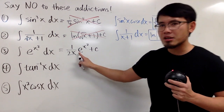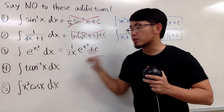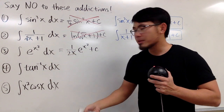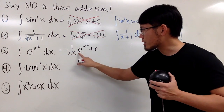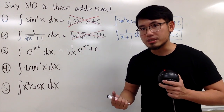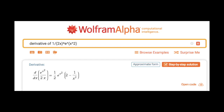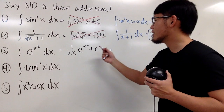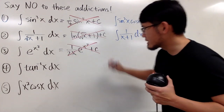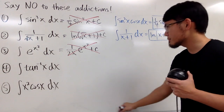Because right here, the derivative of x squared is 2x — it's a function. If you put this down and differentiate it, you will end up having to use the product rule. This right here is not correct.